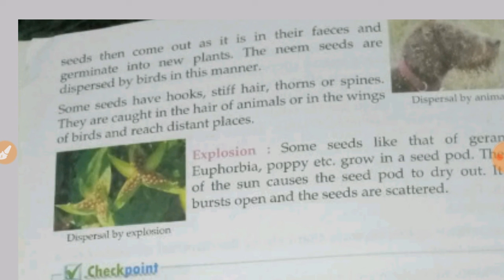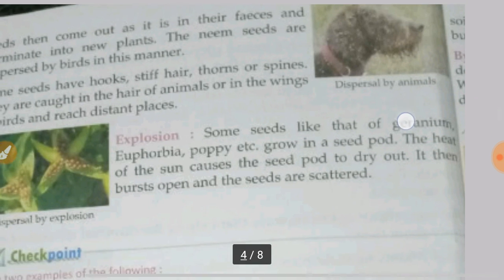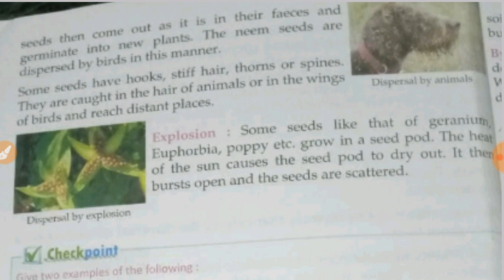Some seeds have hooks, thorns and spines. They are caught in the hair of animals and in the wings of birds and reach distant places. As shown in this picture, there is a dog on which seeds are hooked on its hair, so they can be dispersed to other places easily.